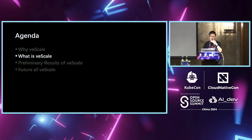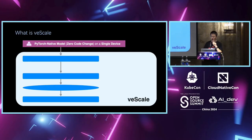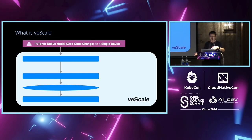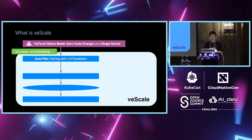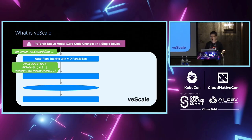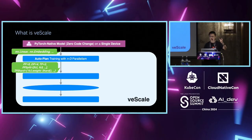V-Scale takes model code written in a fully PyTorch-native way — there's no need to change your model code. You can just execute it on a single device if your memory allows. V-Scale will then generate a parallelization plan based on your model's neural architecture and the hardware environment. This plan contains details about different parallelization dimensions — for example, PP size, DP size, TP size. For PP, you need to decide how to split your pipeline stages, and for TP, you need to decide how to shard your weights.